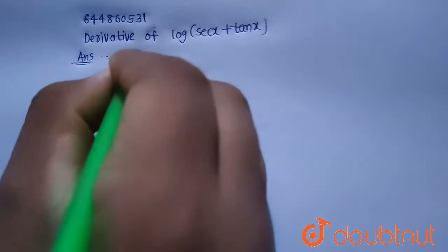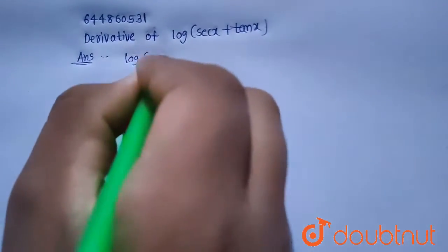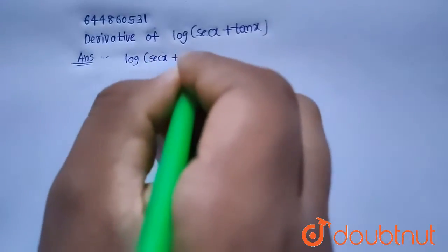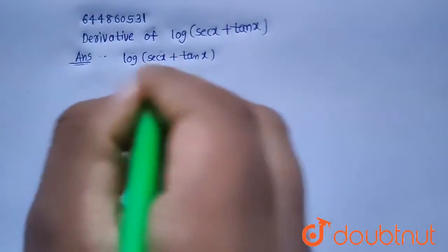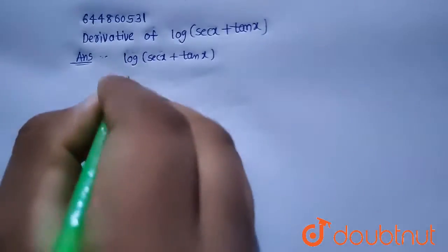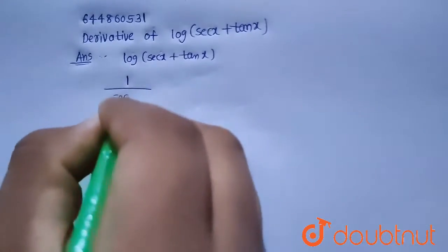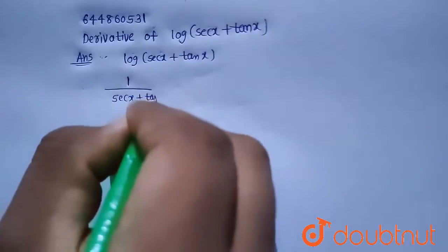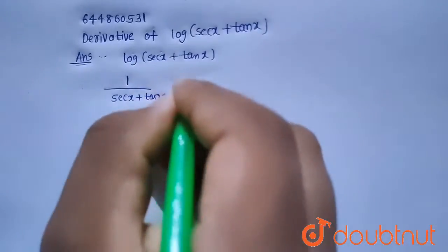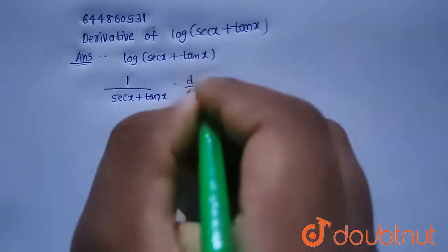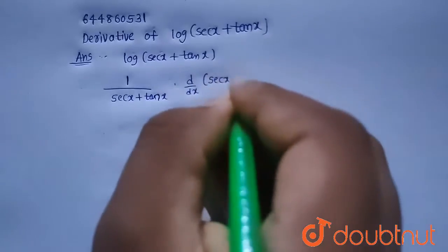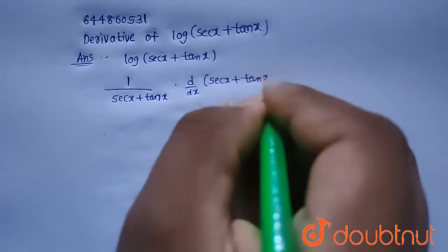So given function is log of secant x plus tan x and we know the derivative of log x is nothing but 1 by x. So this will be 1 by secant x plus tan x and multiplied with derivative of secant x plus tan x because secant x plus tan x is also a function in terms of x.